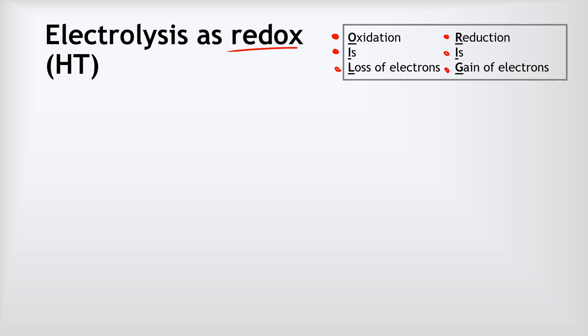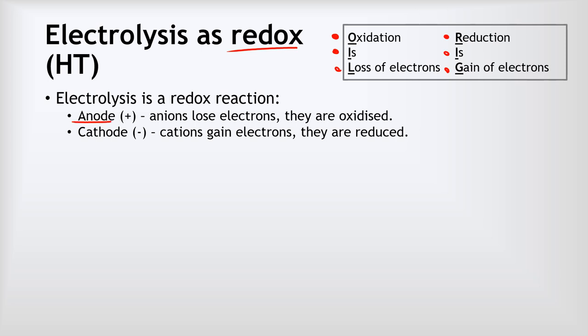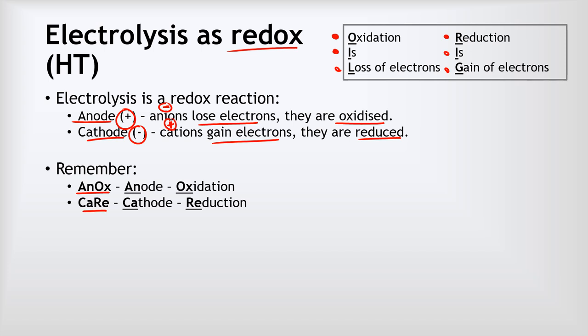At the anode — our positive electrode — the anode attracts anions which are negative, and when the anions reach the anode they become discharged by losing electrons. If you lose electrons, you've been oxidized, so the anode is where oxidation takes place. Equally, the cathode is our negative electrode, and positive metal ions — cations — are attracted to the cathode and discharged by gaining electrons. Gaining electrons means reduction. We can summarize this with the mnemonic ANOX and CARE: at the anode oxidation takes place, and at the cathode reduction takes place.